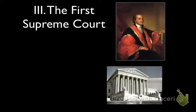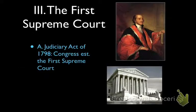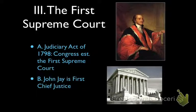The next part has to do with the first Supreme Court. Remember, the judges are all in the judiciary branch. George Washington is going to create the Supreme Court through the Judiciary Act of 1789 — Congress established the first Supreme Court, which is the highest court in our country. There are nine members, and the leader of those nine judges is going to be John Jay, who is the first Chief Justice — the head of that group.